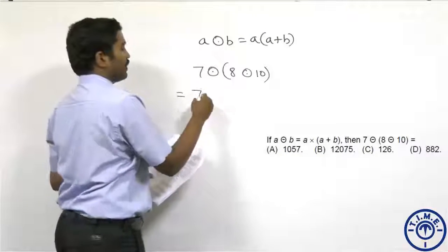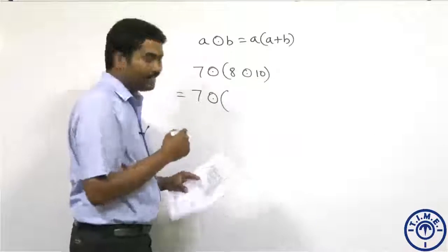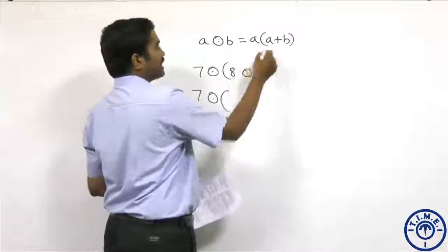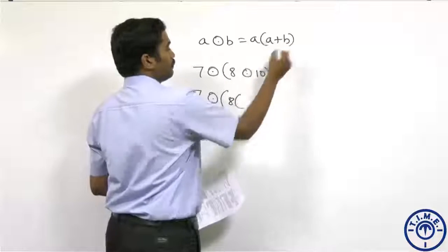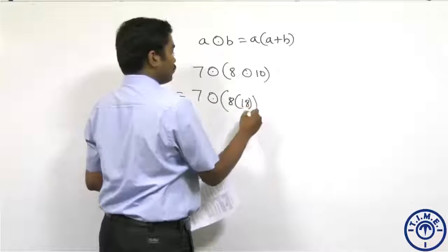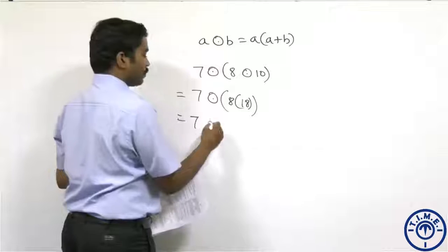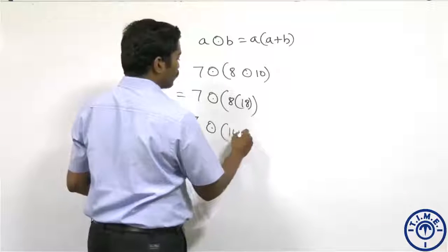First, let us find the value of this bracket. 8 ⊙ 10 would be 8 × (8+10), which equals 8 × 18, which equals 144.